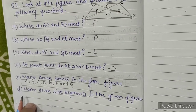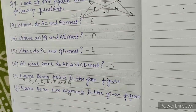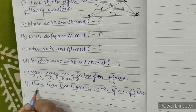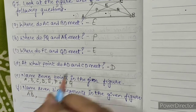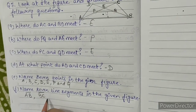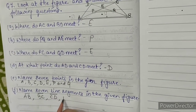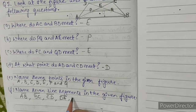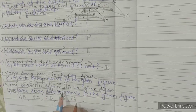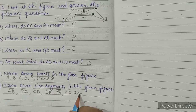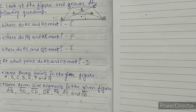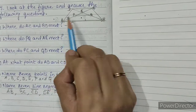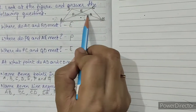F: name 7 line segments in the given figure. In this figure the line segments are AB, BC, CD, DA, AC, BD and PQ. So the 7 line segments are AB, BC, CD, DA, AC, BD and PQ.